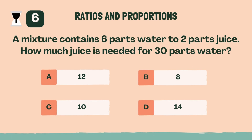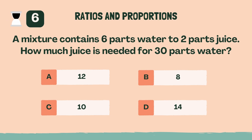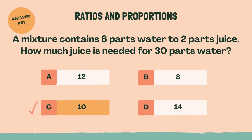A mixture contains 6 parts water to 2 parts juice. How much juice is needed for 30 parts water? C, 10.